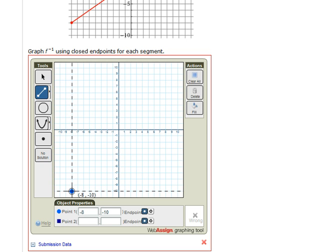The second point was negative 4, negative 4. And since it is on the line y equals x, it will still be on the inverse.